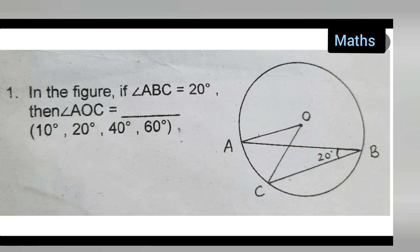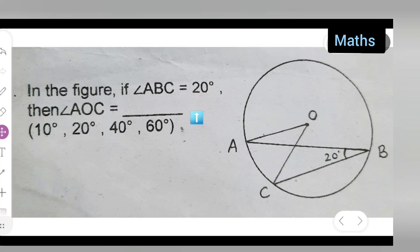Today's question is: in the figure, if angle ABC is equal to 20 degrees, then angle AOC equals what? Angle ABC is given as 20 degrees.